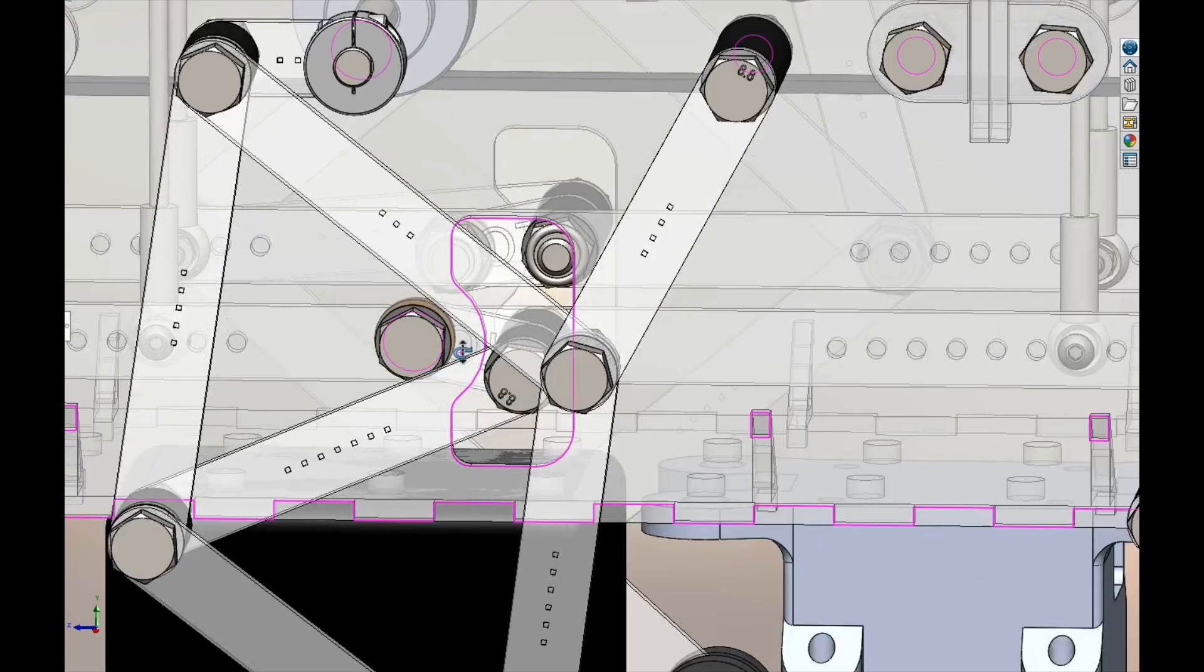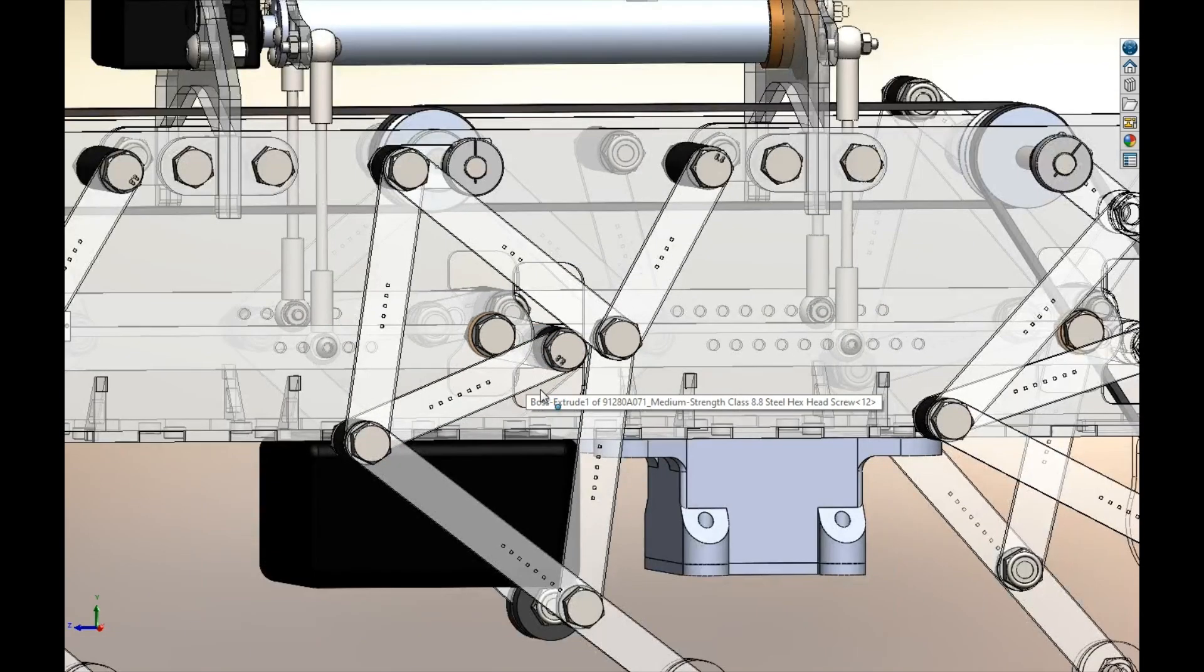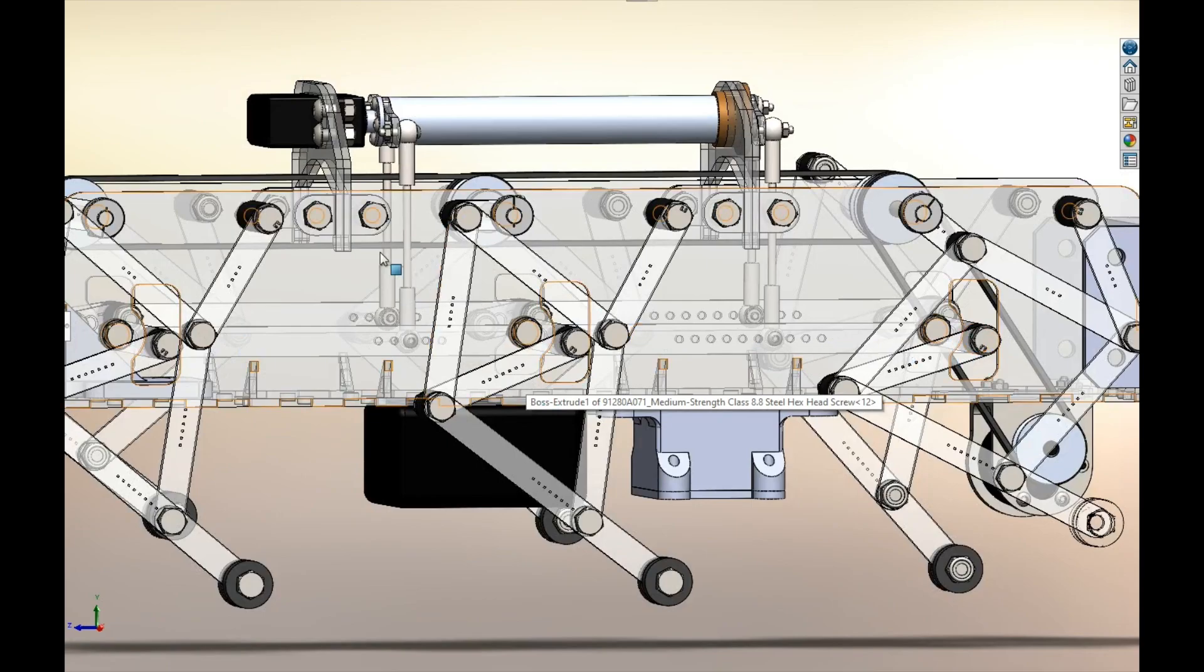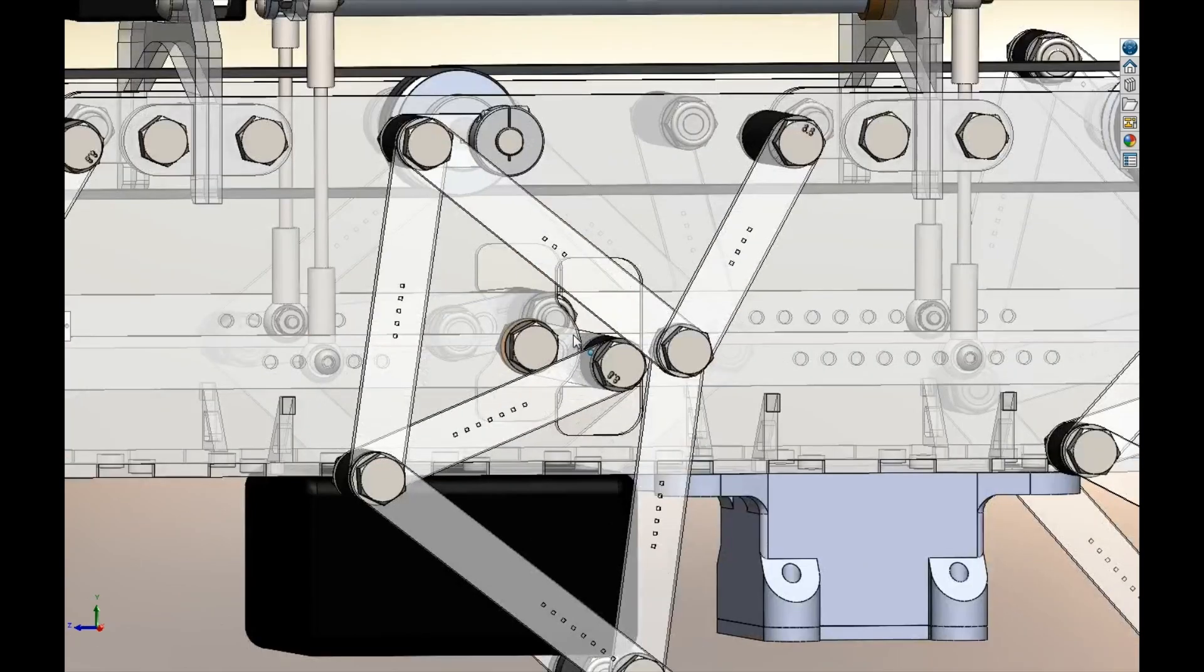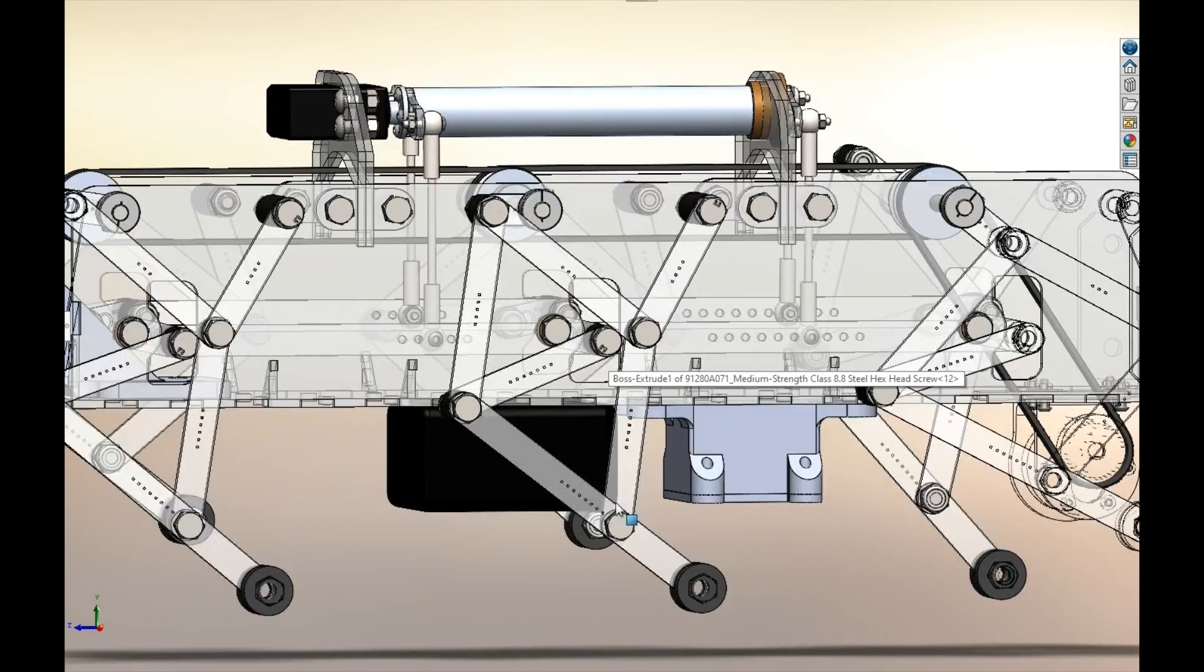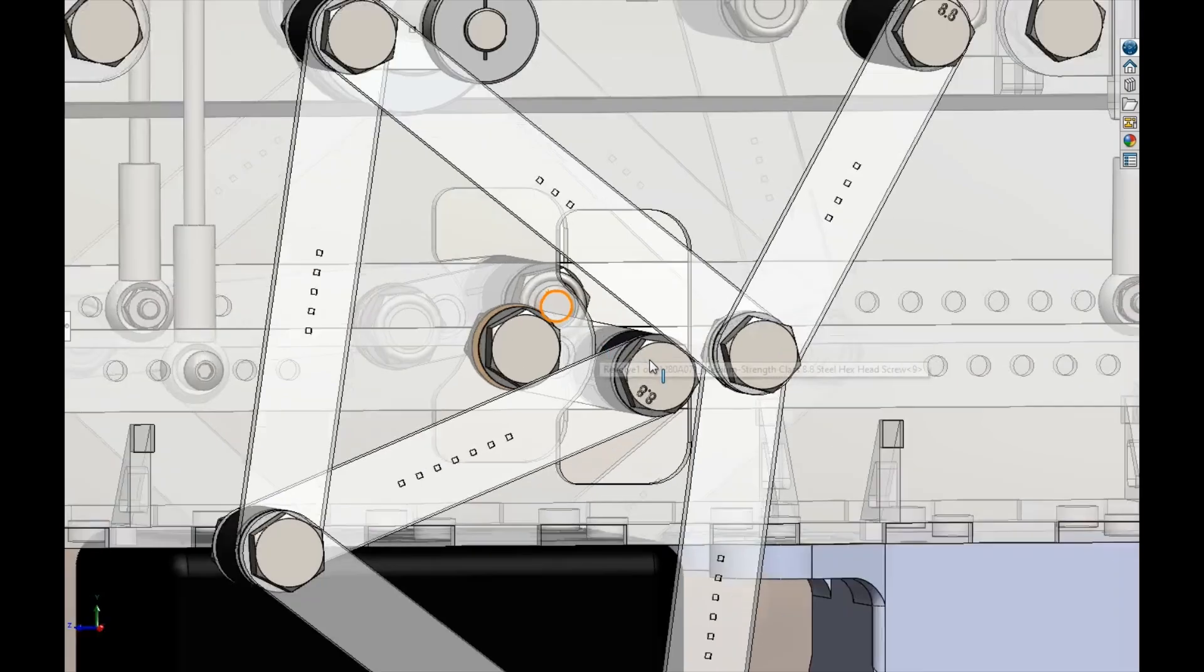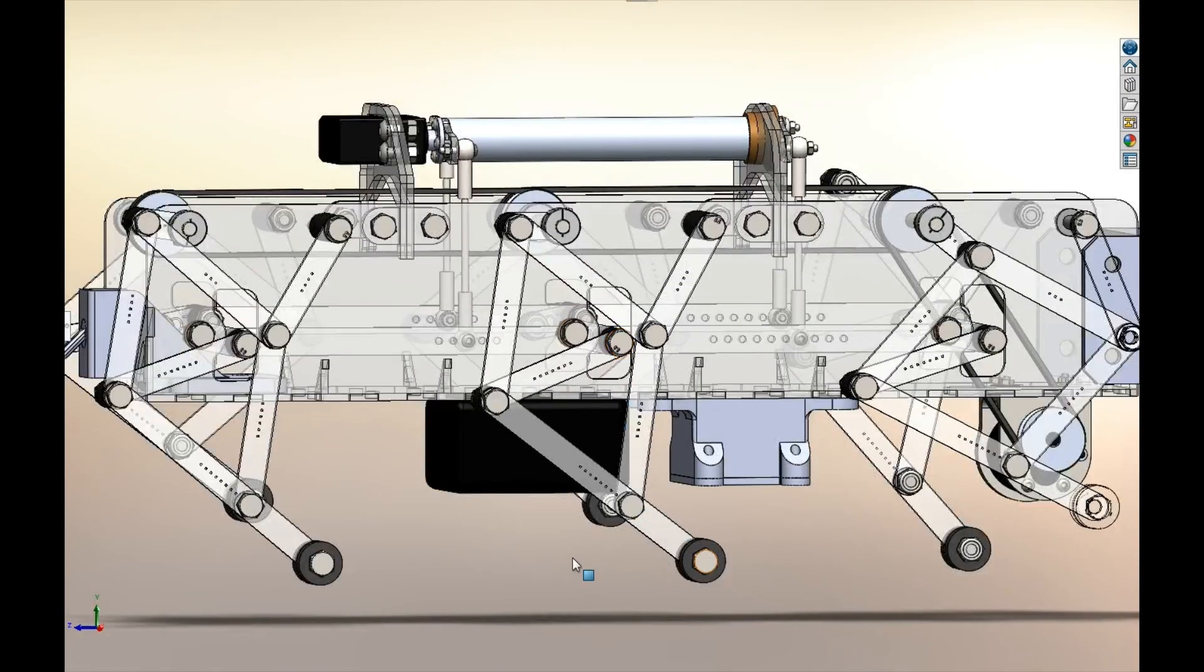And so what those do is they change the position of this grounded joint, which there's one of for each of the six legs. Within the leg mechanism, the position of this joint stays in the same point for the duration of its entire foot travel. But as it moves up and down, that's what alters the gait length.